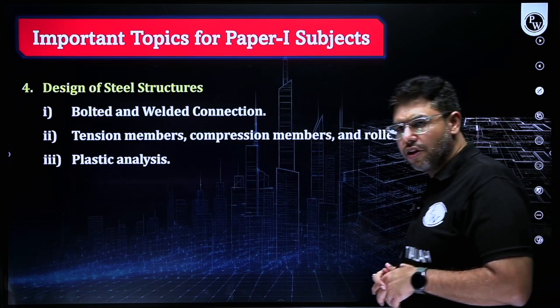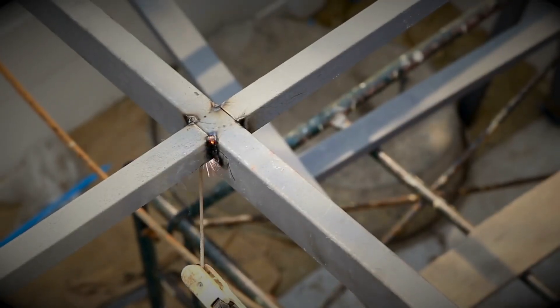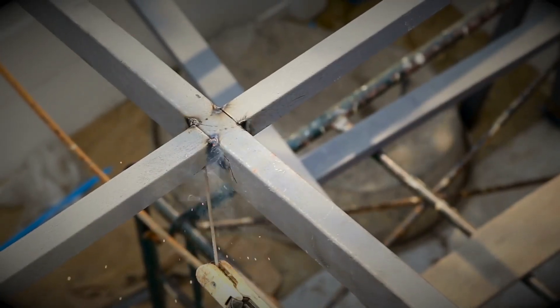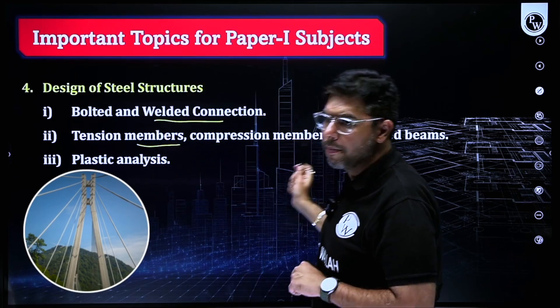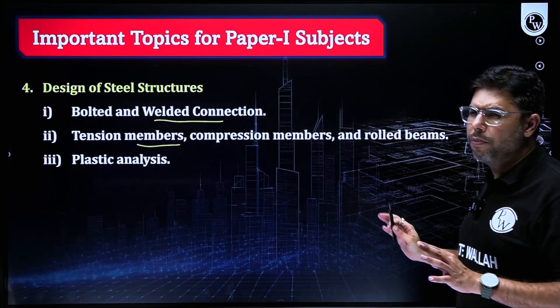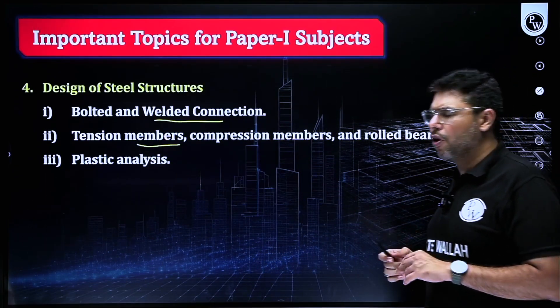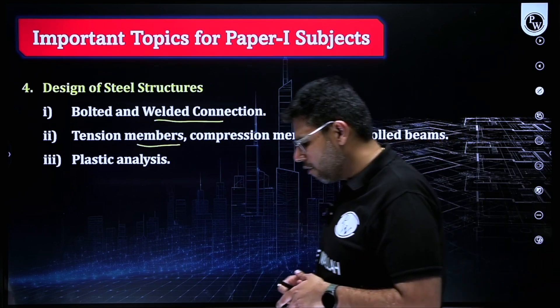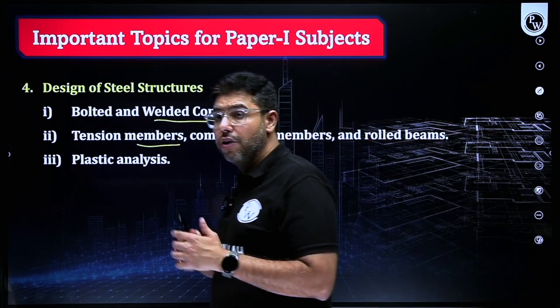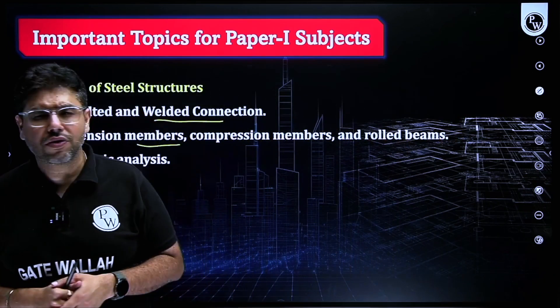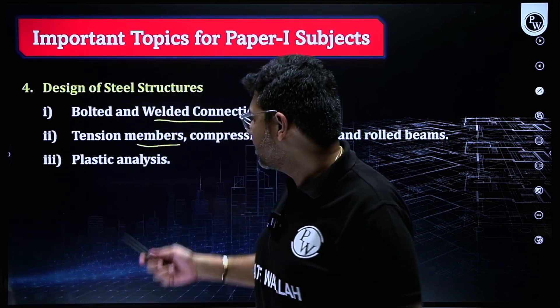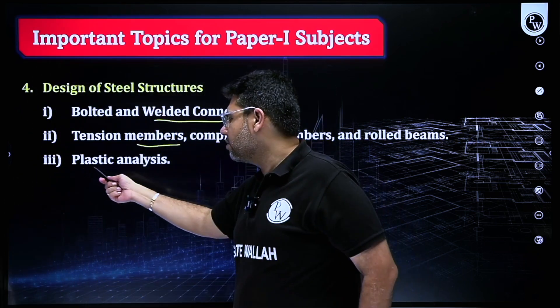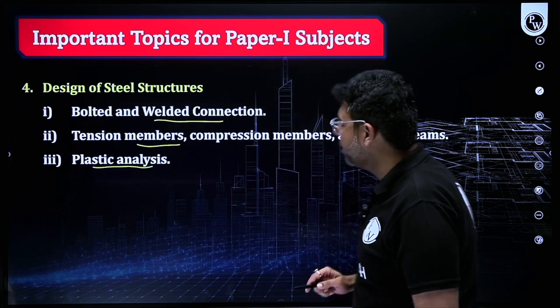For design of steel structures, mostly focus on bolted and welded connections, including eccentric connections. Then tension members, compression members, and rolled beams. From gantry girder and plate girder, questions are generally very lengthy, so you may not be able to attempt them. Lastly, plastic analysis — very scoring, do not leave it.